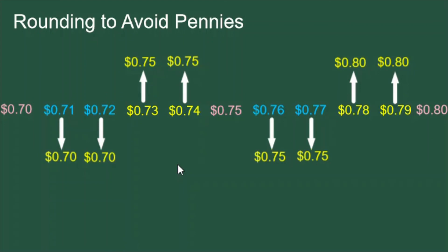This is how we round to avoid using pennies for cash transactions. In debit transactions we don't have to do this — the exact amount to the penny can be debited from the customer's bank account. But when we're using cash we have to do rounding.